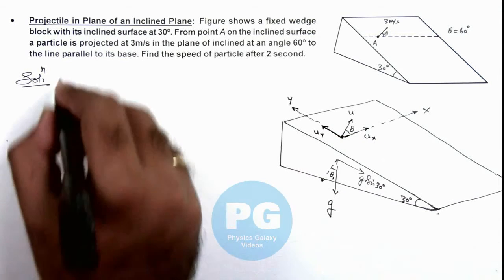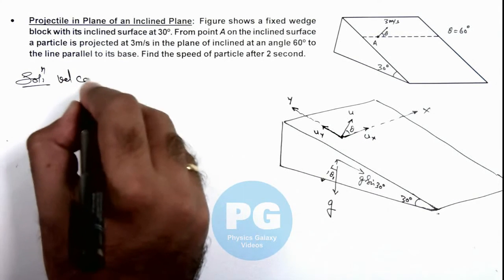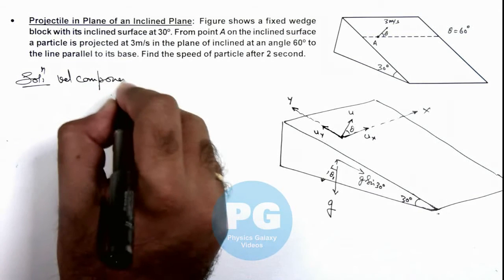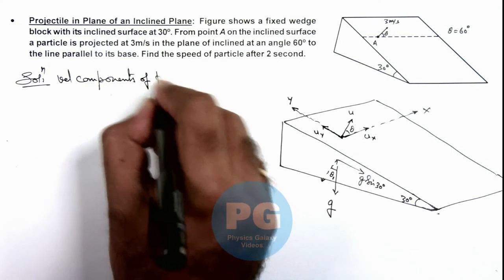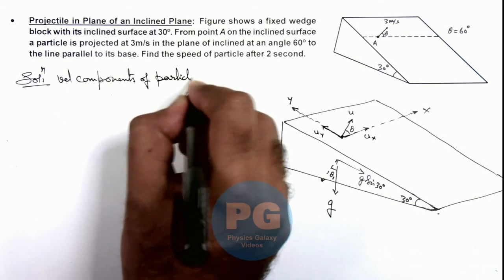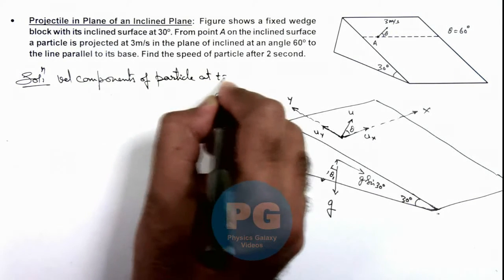Here, velocity components of particle at t equal to zero are: